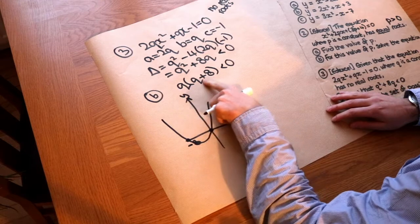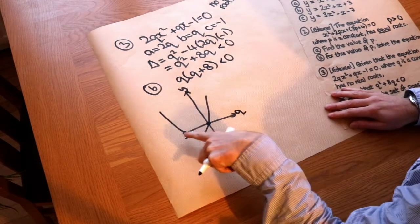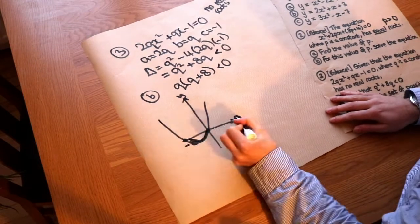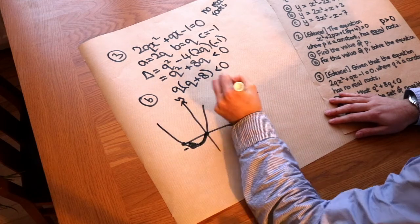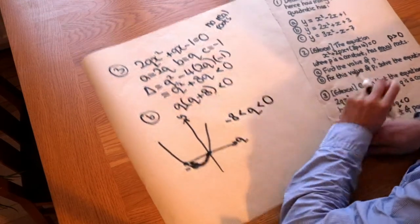So if y = q(q + 8), we're wondering where the y value is less than 0. Well, the y value is less than 0 in this section of the graph. So we can see q is between -8 and 0. And that is the final solution.